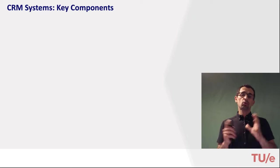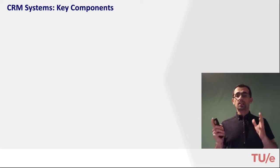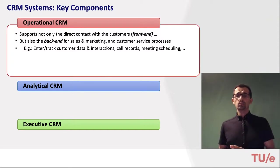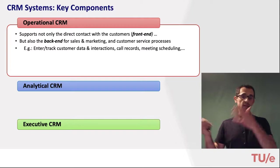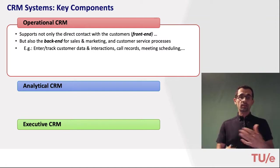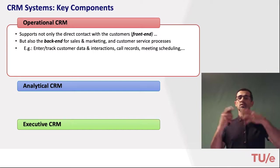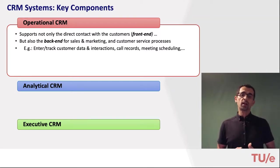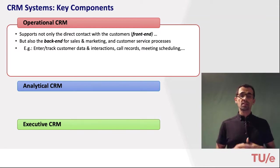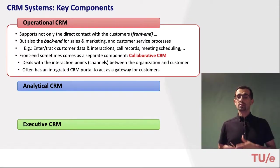CRM systems support almost all CRM processes and are typically structured into three main components: operational CRM, analytical CRM, and executive CRM. The operational CRM supports the operational processes — not only the front-end processes involving direct contact with customers, but also back-end processes such as entering and tracking customer data, interaction call records, and meeting schedules. The front-end sometimes comes as a separate sub-component called collaborative CRM, which deals with interaction points between the organization and the customer.